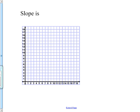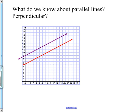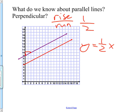Slope's definition is rise over run. If I have a couple of parallel lines and wanted to find the slope, they must have the same slope. If I rise 1 and run 2, the slope is one-half. If I was going to write the equation for the purple line, I'd say Y equals one-half X plus the Y-intercept. For the purple line the Y-intercept is plus 9, and the red line would be the exact same thing except it would say plus 6.